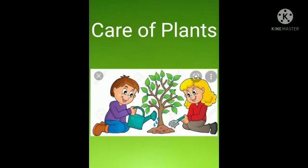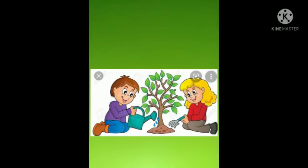We must care about all plants as they are very important for us. Plants give us oxygen and many other useful products. Plants also provide homes to many animals and birds, and without plants, there is no life possible on this earth. Here we end our lesson — see you in the next video, bye bye.